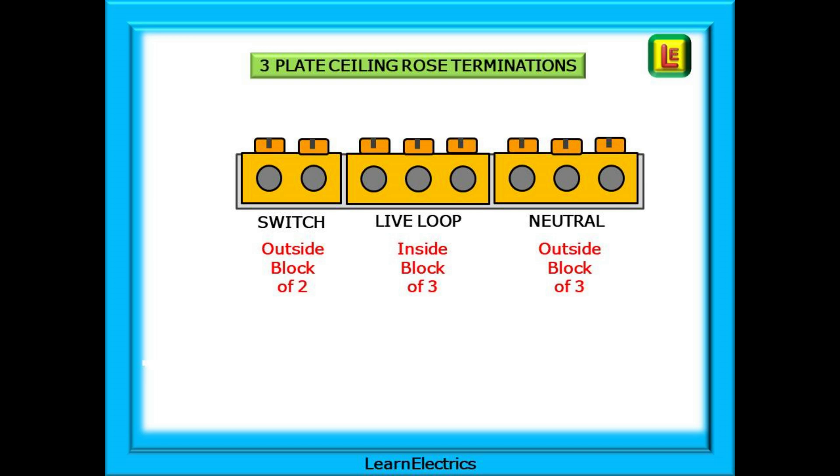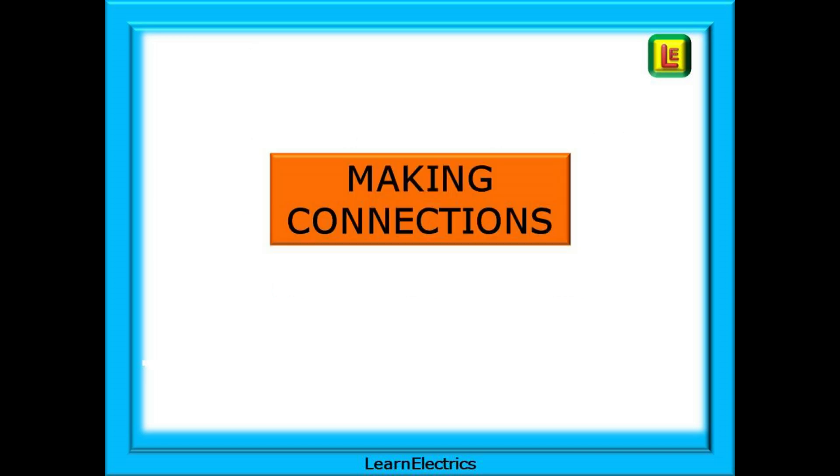We always designate the brass terminal blocks as follows: the outside block of two is used for the switch wires, the middle block of three is the live loop block, and the outside block of three is the neutral block. Let's look now at how we make the wiring connections inside the ceiling rose, and how we shouldn't.